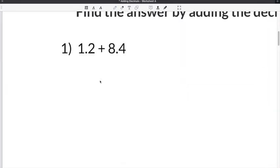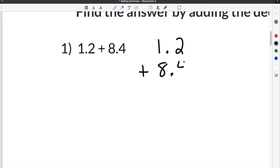The first problem on our adding decimals worksheet gives us 1.2 plus 8.4. We're going to take the two numbers and line them up vertically, so 1.2 plus 8.4.